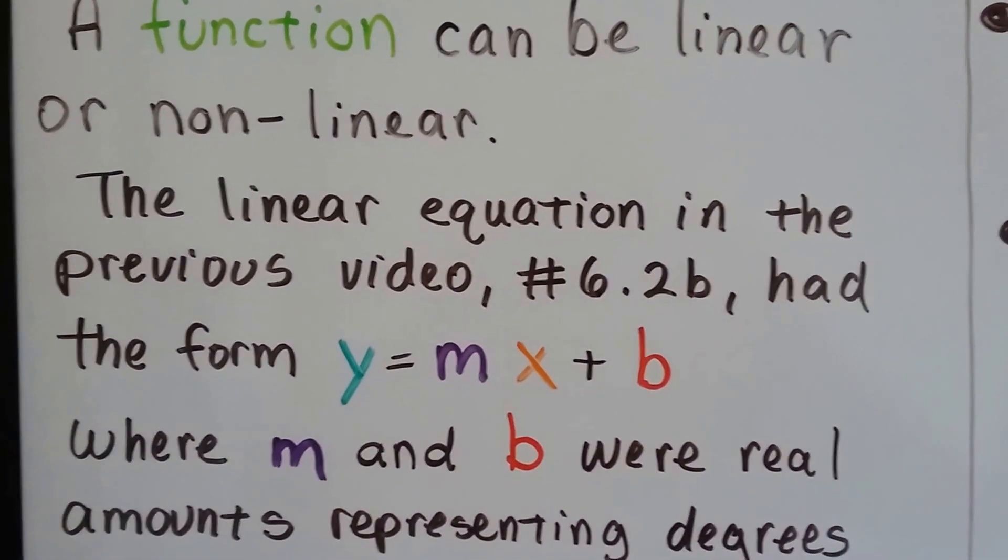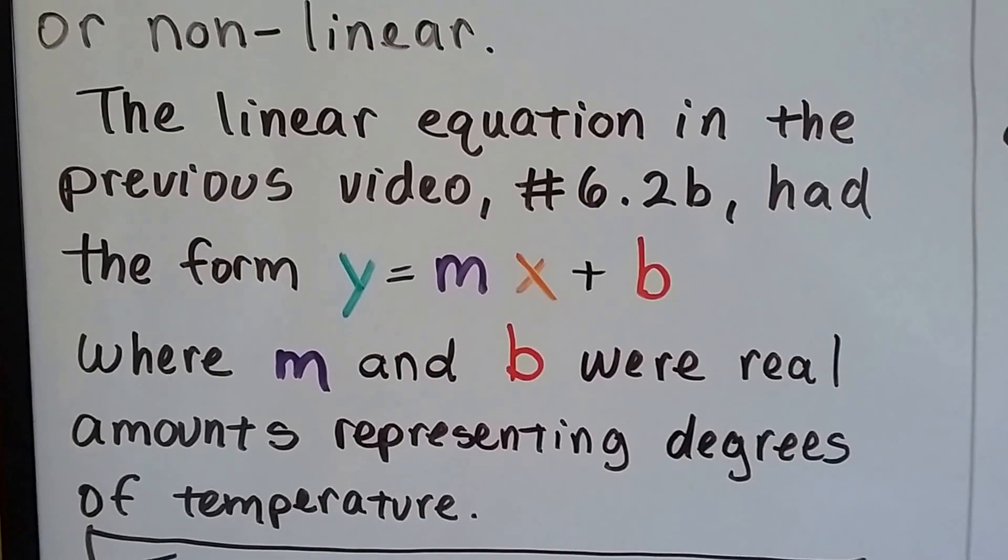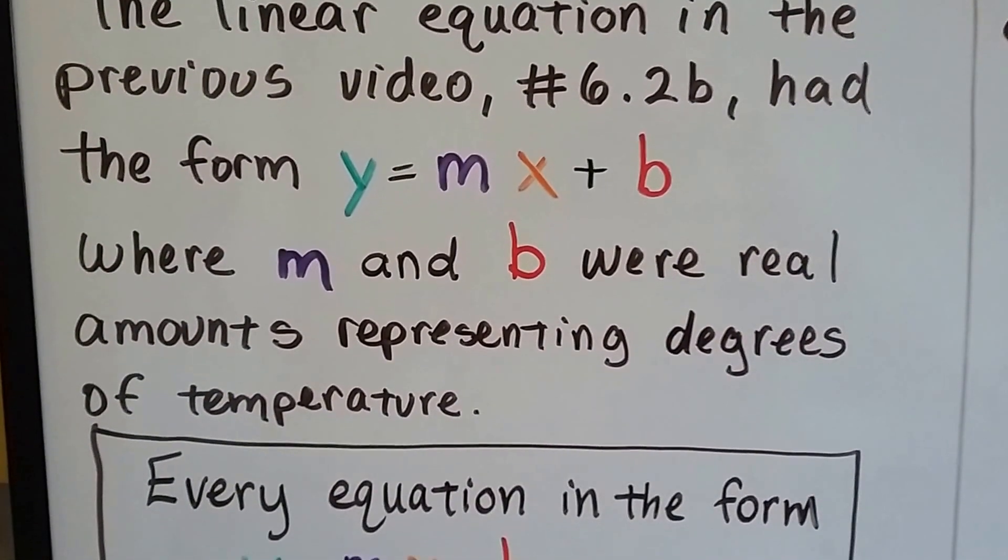The linear equation in the previous video, 6.2b, had the form y equals mx plus b, where m and b were real amounts representing degrees of temperature.